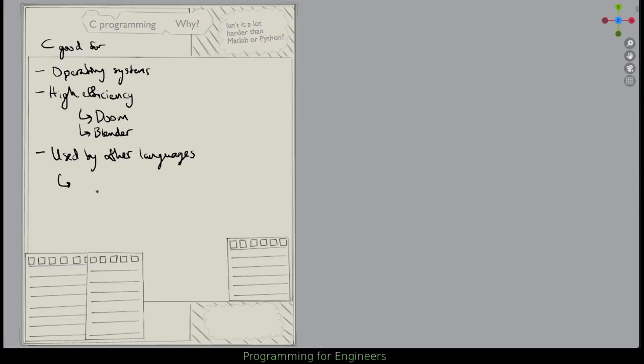Another thing is C is good for being used by other languages. So this is things like libraries. If you want increased functionality, if you need some more direct control over some aspect in an operating system, for example, sometimes you'll use a C library.